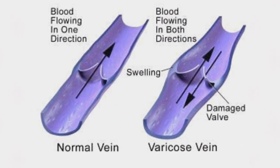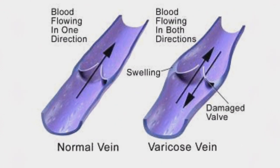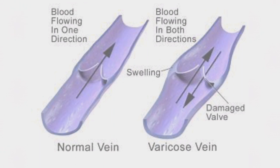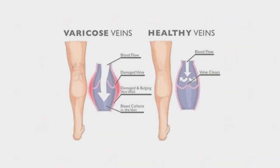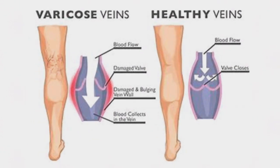The valves in the veins normally allow only a one-way direction of blood flow. When the valves become defective, they fail to block the reverse flow of blood.